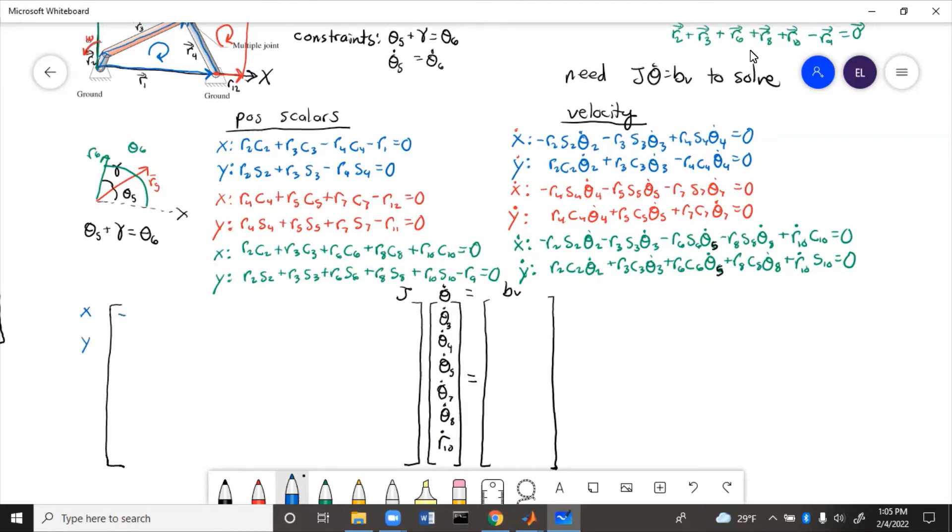It looks like theta 3 dot and theta 4 dot are the only unknowns that show up here. So we take their coefficients, negative r3 s3, and r4 s4, and then the other ones are just all going to be zero because those variables don't show up in the blue equations.